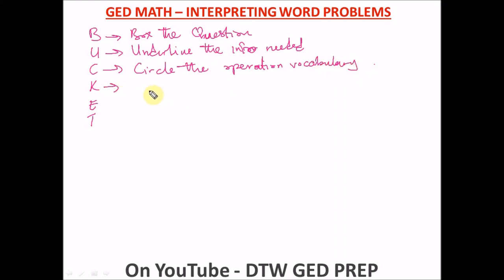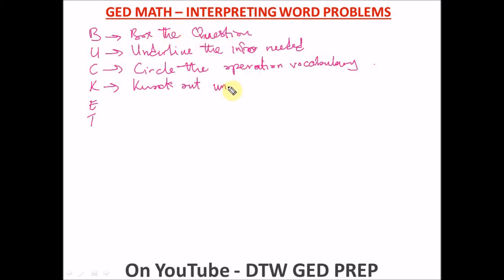K means you knock out information not needed. In word problems, examiners and any exam body that sets word problems always put in unneeded information to confuse you. So you knock out every piece of information that is not needed — anything that won't help you answer the question you've boxed. Knock out unneeded info.